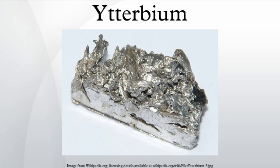Ytterbium was discovered by the Swiss chemist Jean-Charles Galissard de Marignac in 1878. While examining samples of gadolinite, Marignac found a new component in the earth then known as erbia and named it ytterbia, for Ytterby, the Swedish village near where he found the new component of erbium. Marignac suspected that ytterbia was a compound of a new element that he called ytterbium. In 1907, the French chemist Georges Urbain separated Marignac's ytterbia into two components, neoytterbia and lutetia. Neoytterbia would later become known as the element ytterbium, and lutetia would later be known as the element lutetium.